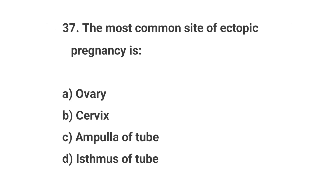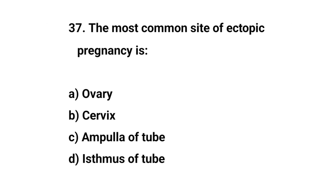Question No. 37. The most common site of ectopic pregnancy is? Right answer is C: Ampulla of the fallopian tube.